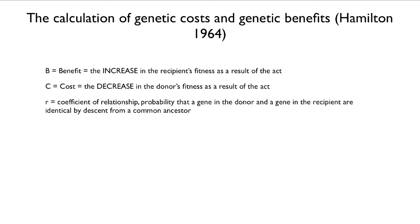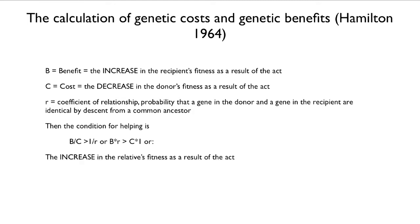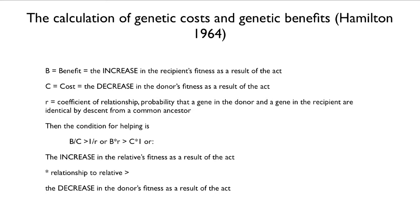Given those values, the condition for helping is that B over C is greater than 1 over R, or that B times R is greater than C. In other words, the increase in the relative's fitness from the act times the relationship to the relative must be greater than the decrease in the donor's fitness times the donor's relationship to itself, which is 1. When you write it out that way, it all makes sense.